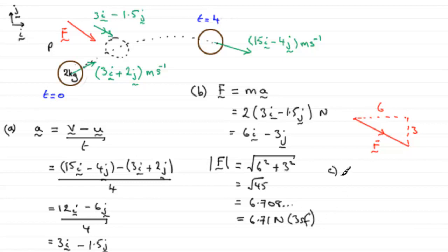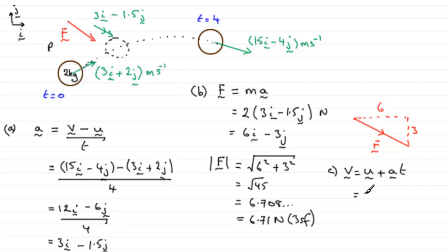For part C, we've got to work out the velocity of P at time t equals 6 seconds. We use the equation v equals u plus at, but with vectors — that's why I'm underlining these values. After six seconds, the initial velocity was 3i plus 2j, and then it's 6 lots of the acceleration: t being 6, so 6 multiplied by the acceleration vector 3i minus 1.5j.